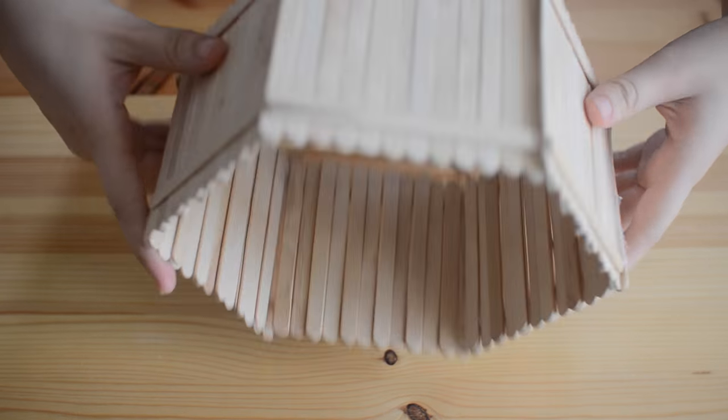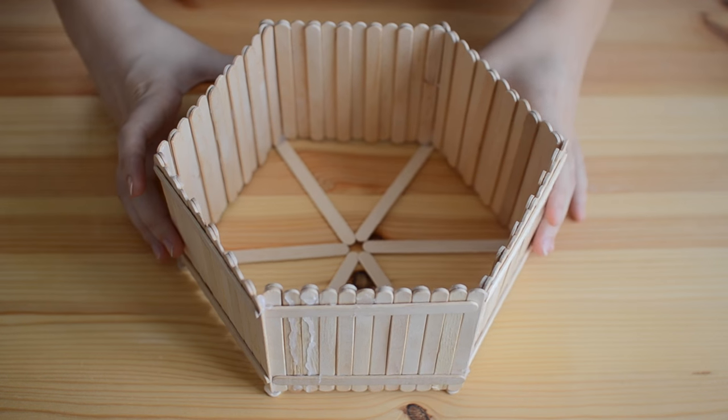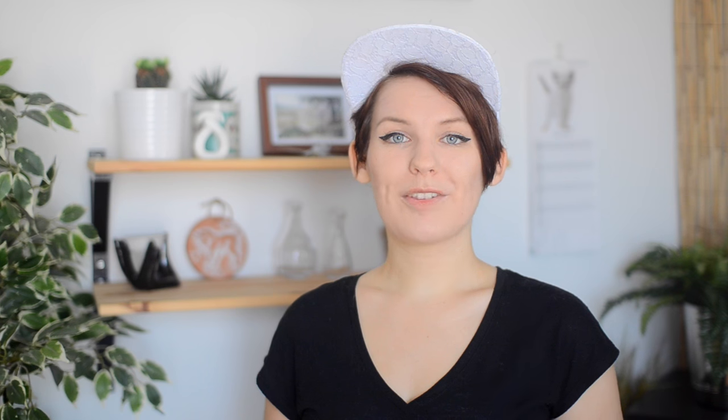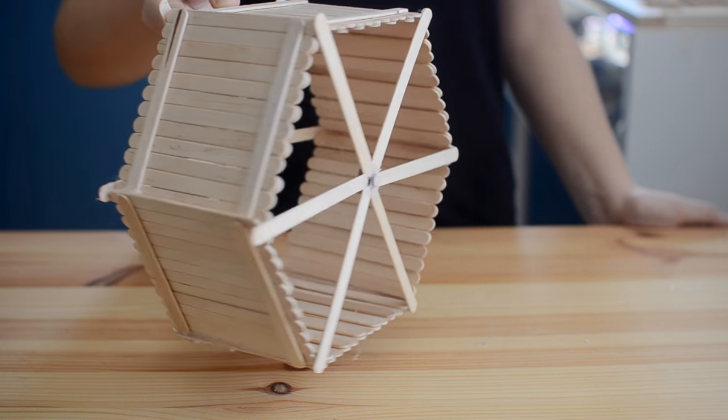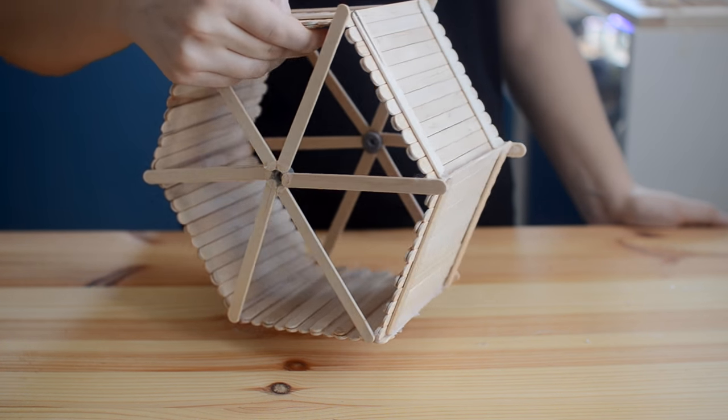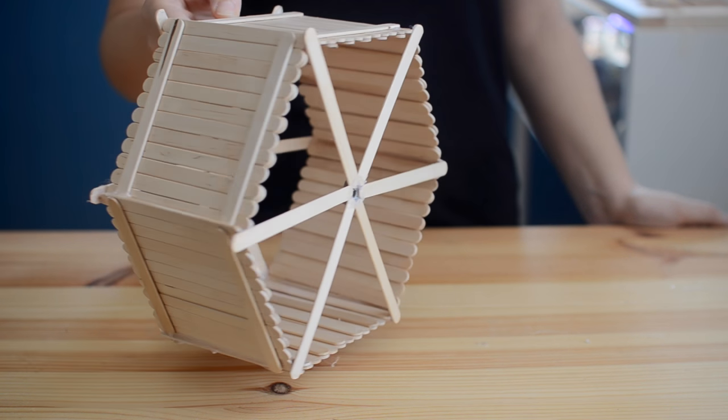Again, wait until the glue has completely dried, then flip the wheel over and on the inside, over that hole, you're going to glue one of your washers. Once that's glued down, you're going to repeat this exact same process on the other side of the wheel so that both sides have cross sections.